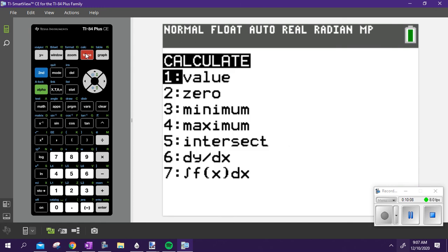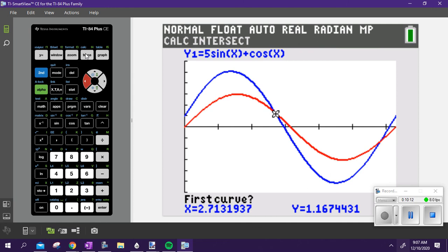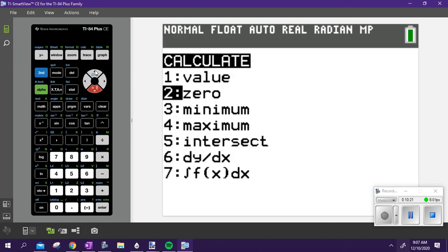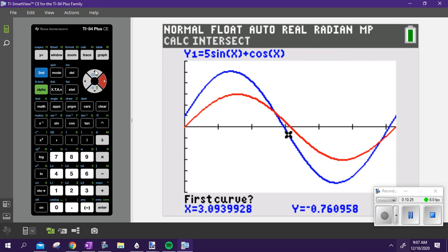Dos. Second calculate. Intersect. We go here, we move, get on top of it. Hit enter, hit enter, hit enter. 2.678. And do it again. Second calculate, intersect. Hit enter, move it over top of it. Once I get on top, hit enter, hit enter, hit enter. 5.820. Questions on something there?